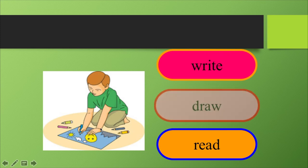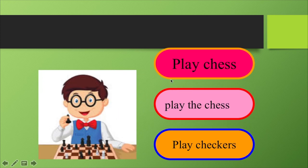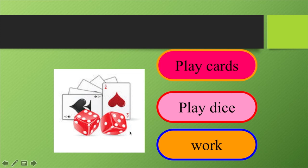He is drawing — draw, dibujar. Repeat after me: draw — dibujar. Muy diferente a como se escribe — draw, dibujar. Now, play chess — jugar ajedrez. Play cards, or play dice. This is a dice and those are cards — cartas, dados, dice, card.